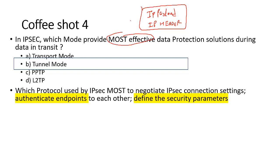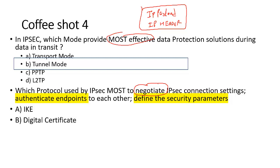Next question: which protocol does IPSec use most to negotiate IPSec connection settings? The keyword is 'negotiate.' Think of it like a smuggling analogy — before exchanging gold, one person has one piece of a note and another has the other piece; they map the note, identify the serial number, and exchange the gold. Similarly in IPSec, we negotiate the connection settings, authenticate endpoints to each other, and define security parameters.